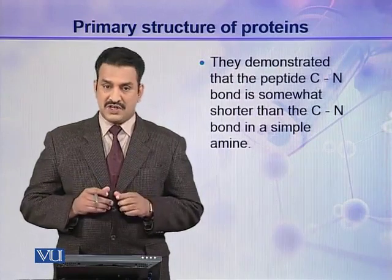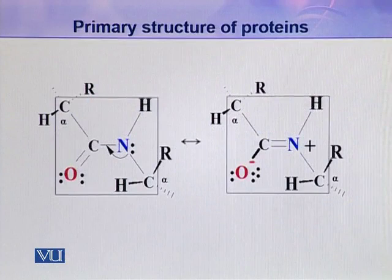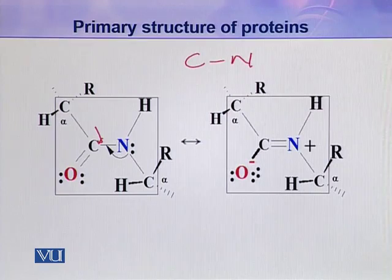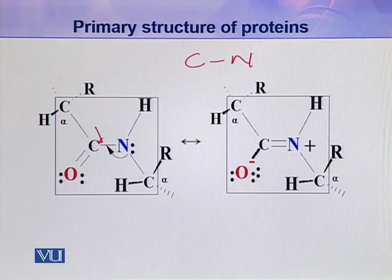They demonstrated that the peptide C-N bond is somewhat shorter than a normal C-N bond present in a simple amine. As you can see in this picture, this is the peptide bond between C and N, and this peptide bond is covalent in nature. But this covalent bond is a little shorter than the normal C-N bond present in other biomolecules, such as in a nucleotide where ribose sugar is attached to the amino group of a nitrogenous base.